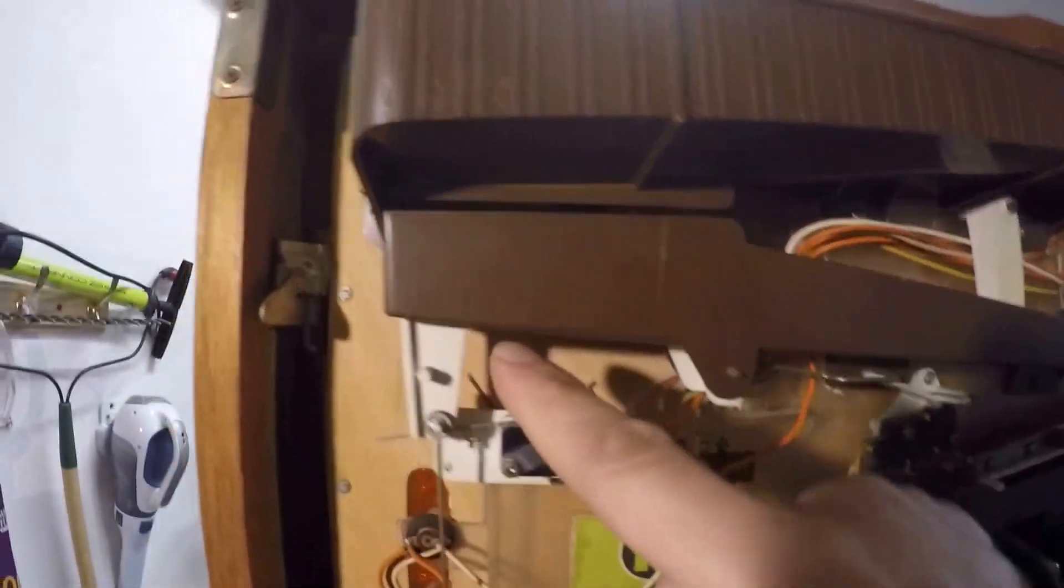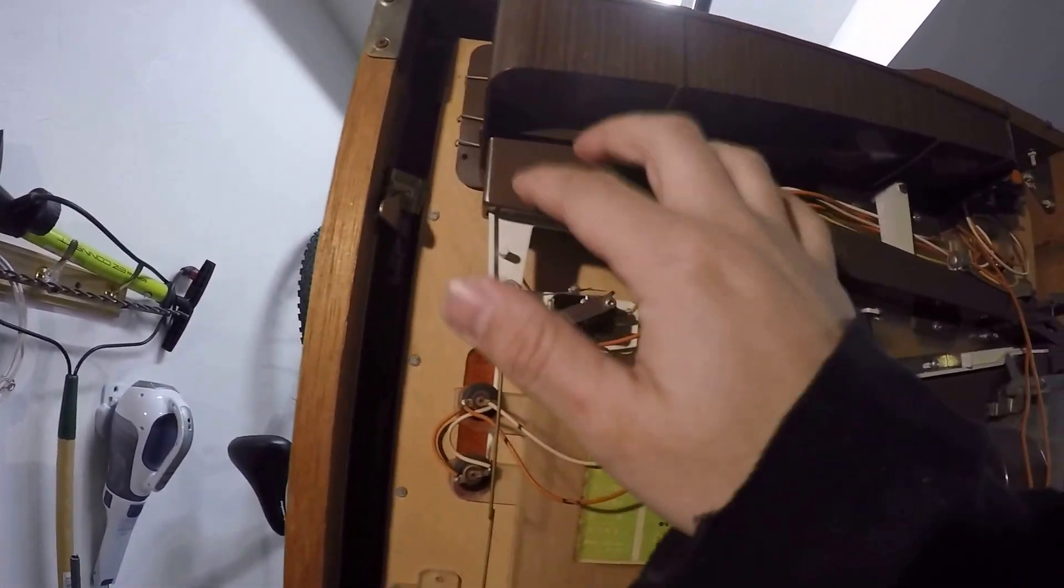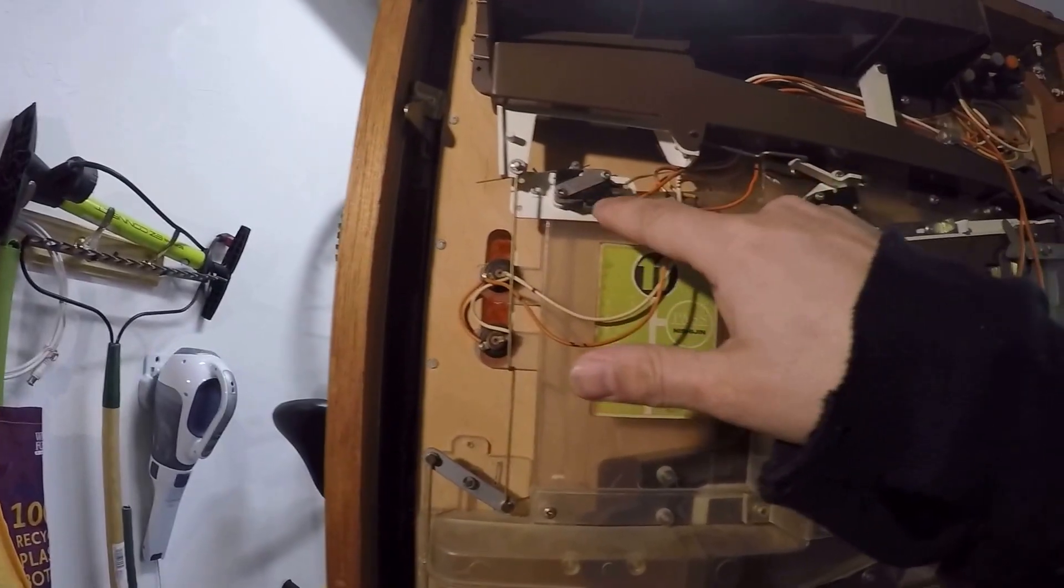That is because, as the balls get backed up over here, they will push on this little system here that will raise or lower the flag. So, when it's down, that means that the tray is full and you can play. One thing I noticed is that there's two switches.